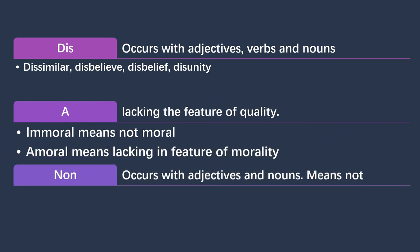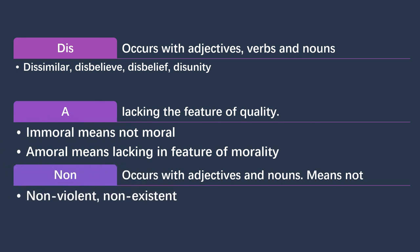Another negative prefix is 'non,' which mostly occurs with adjectives and nouns. If you use 'non' as a prefix it gives the meaning of 'not.' For example, 'non-violent' and 'non-existent.' These are the things we have discussed regarding negative prefixes.